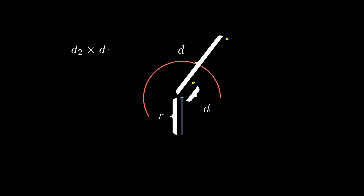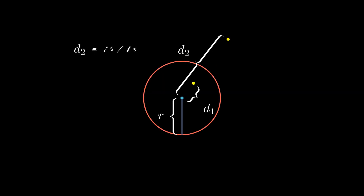The formula for inversion is given as follows: take the distances from the center of the circle to the point we are inverting and to the inverted point. The product of these two distances must be equal to the square of the circle's radius.